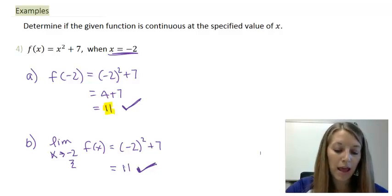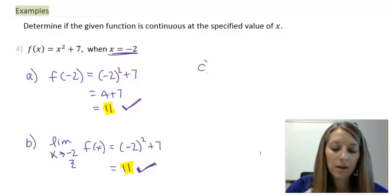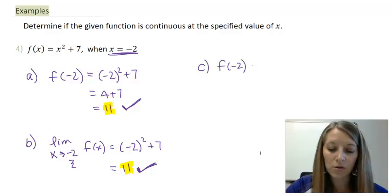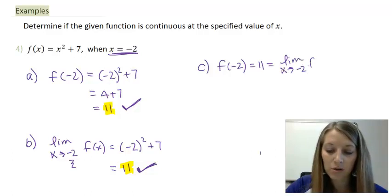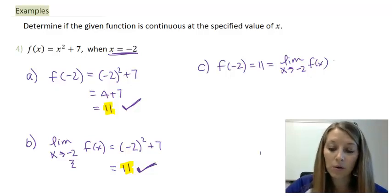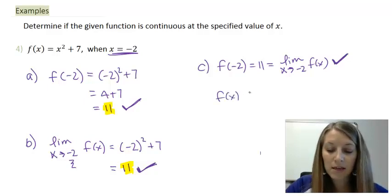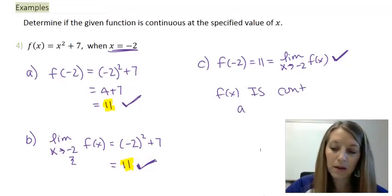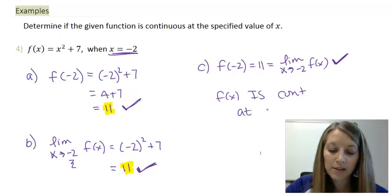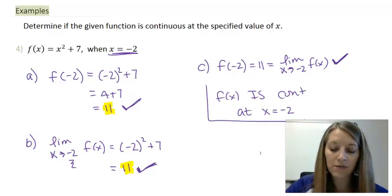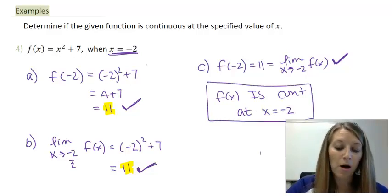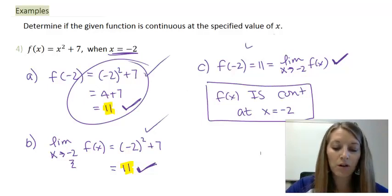Notice the answers we got for part A and part B match — of course they should, because we did the exact same work in both. So part C: our function at negative two gives us 11, which is the exact same as the limit as x approaches negative two. Part C holds. Since all three properties hold, f of x is continuous at x equals negative two. This is one of those examples that seems difficult but is almost too easy — basically we did just one step of work, and that happens to be the same for all three steps.